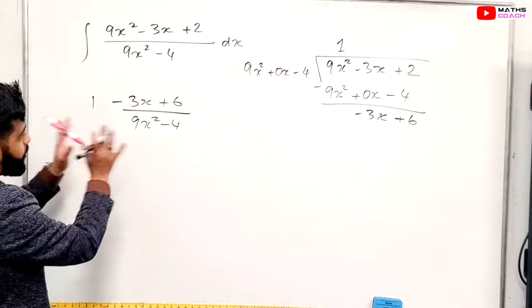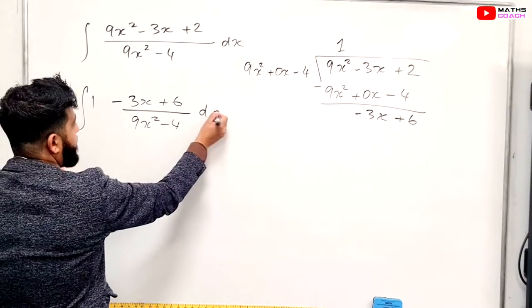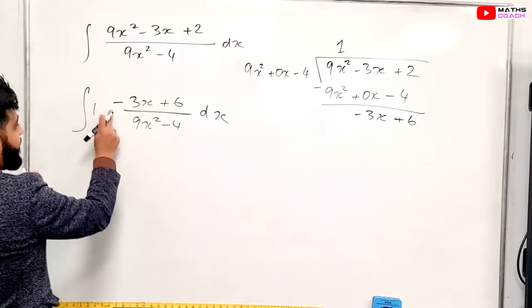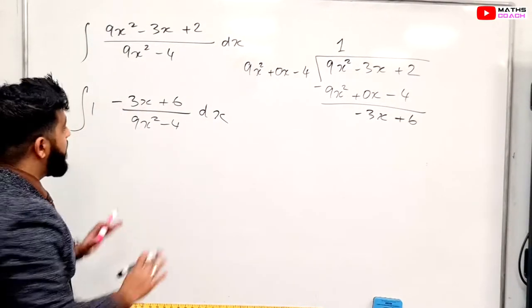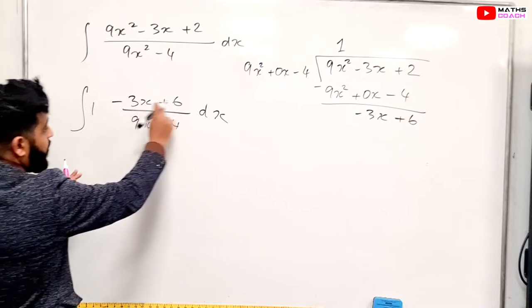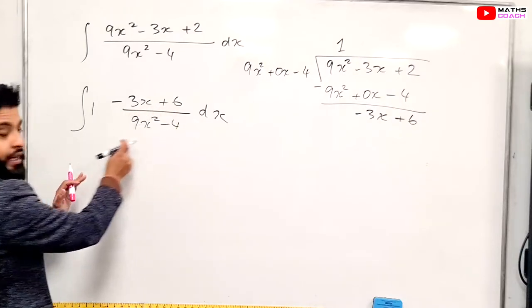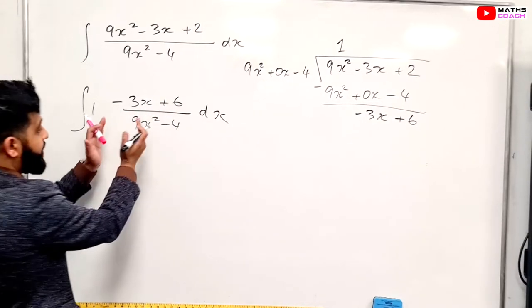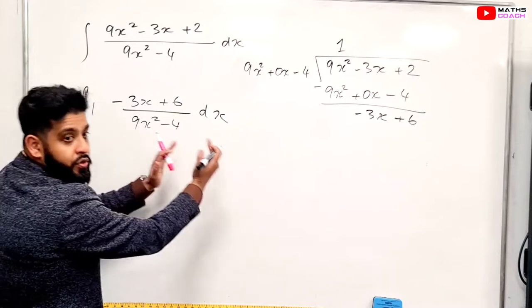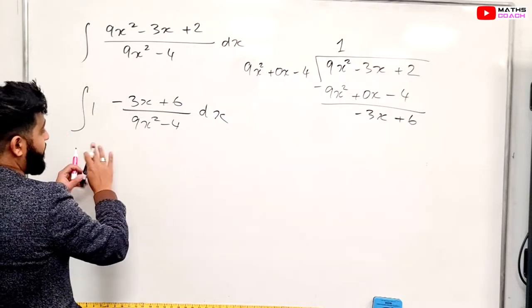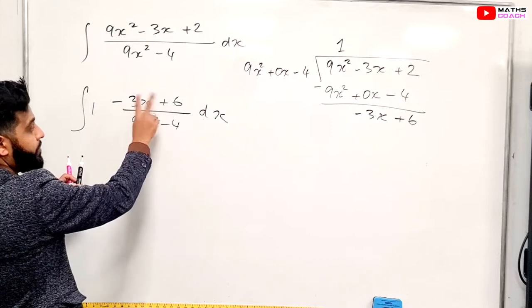Now we are going to do two things here. So before we start to integrate this, so we'll just write the 1 here. Remember, this minus belongs to the 3x. Now before we're going to start integrating this, we need to deal with this right here. So what we're going to do here is we're going to have our difference of 2 squares. Second thing that we're going to do, because this might confuse some of you, we're going to just swap them around.